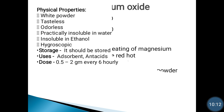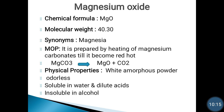Next compound we are going to see is magnesium oxide, formula MgO. Its molecular weight is 40.30. Its synonym is Magnesia.